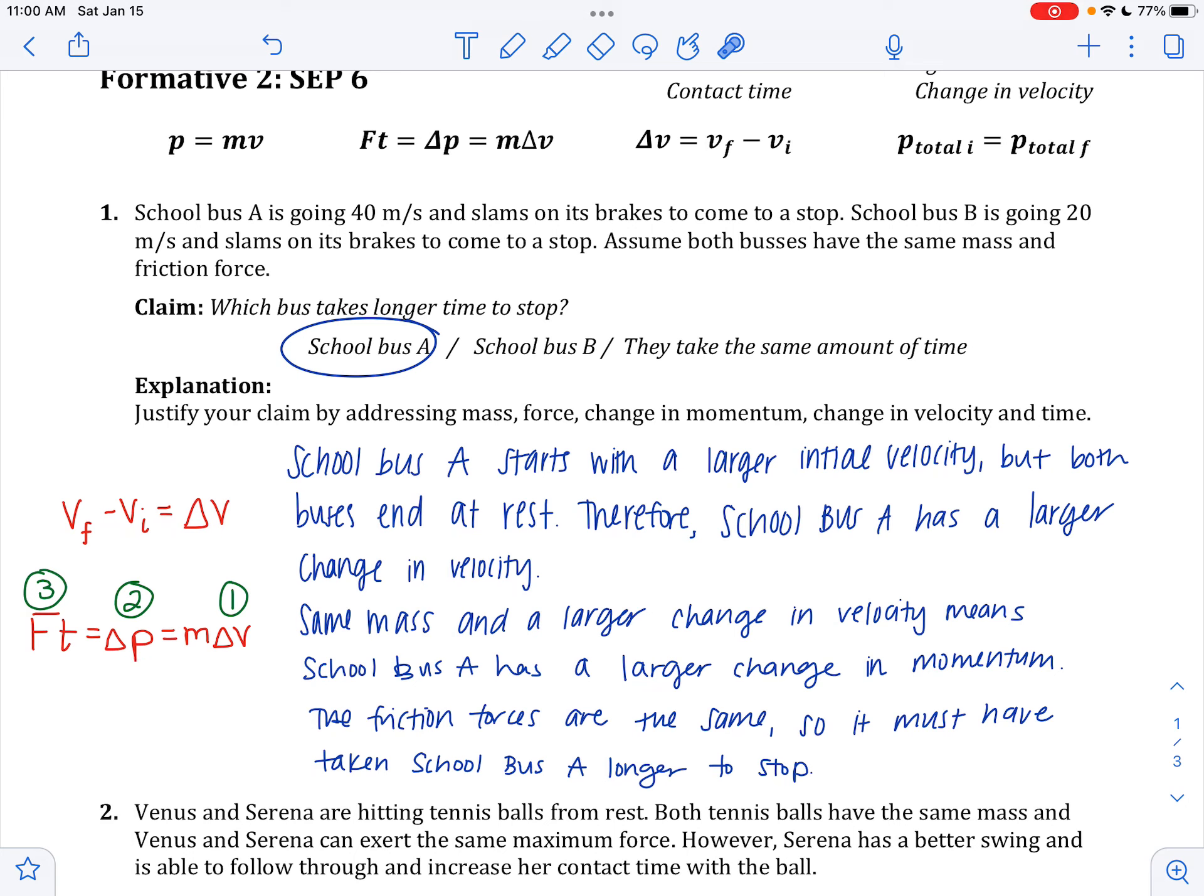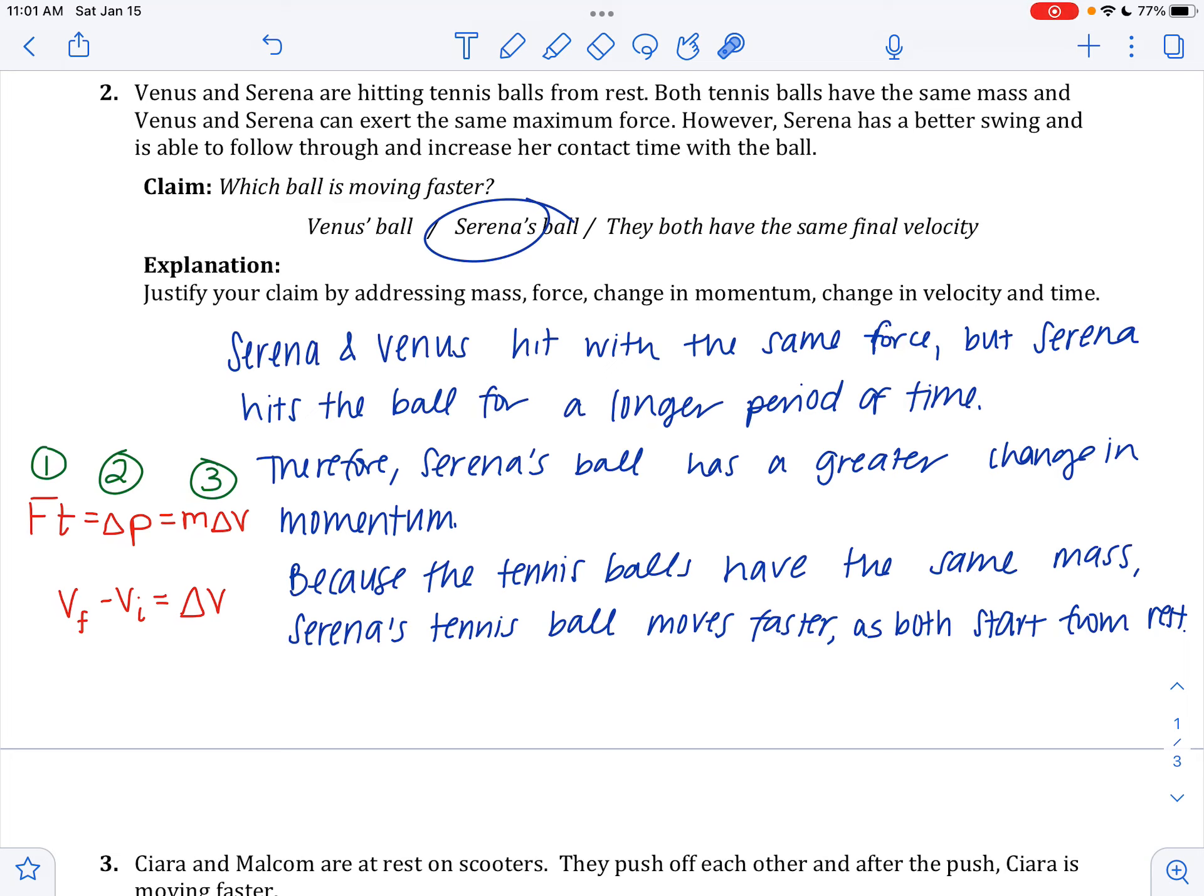But you need to address all those variables. So just make sure you didn't write specifically for this last statement here a sometimes true statement, and that yours is an always true statement. You've got to talk about all the variables in there. So there's number one. Here's number two. Again, pause the video, read my answer, read your answer, and make corrections. And then come back to the video when you're done.